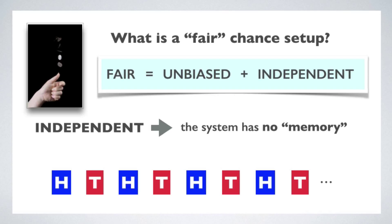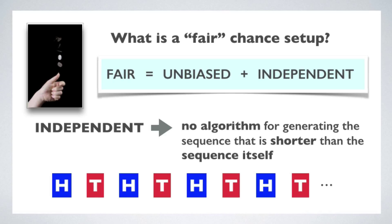Another way this is expressed is to say that the system retains no memory of its history of past outcomes. For computer scientists, it can be natural to think in terms of the algorithmic complexity of a string. A string of symbols that is probabilistically independent has the feature that there is no algorithm, no set of instructions, that can generate that sequence as output that is shorter than the original sequence itself. When you have predictive regularities, these can be captured in a rule that compresses the amount of information needed to generate the sequence. For an independent sequence, there are no such regularities, so you can't compress the sequence any further.